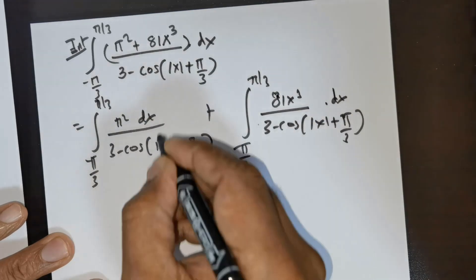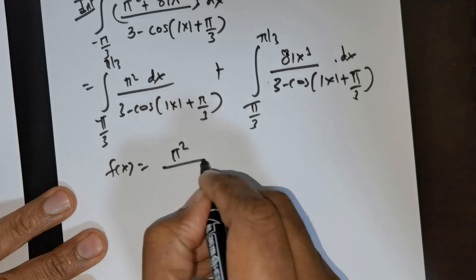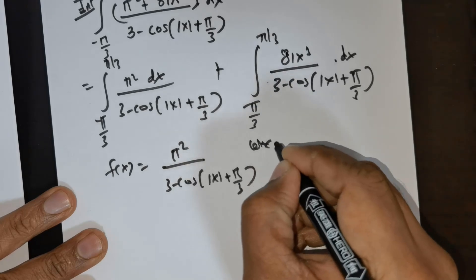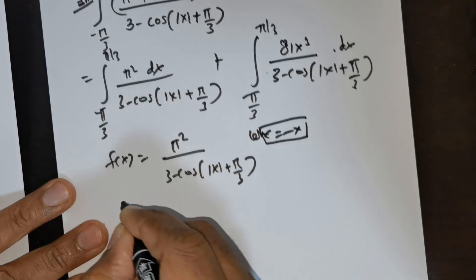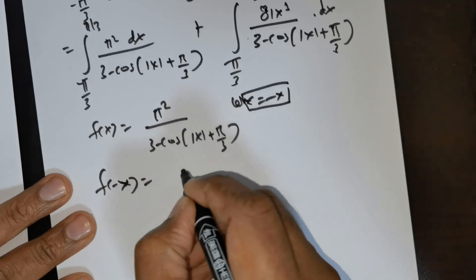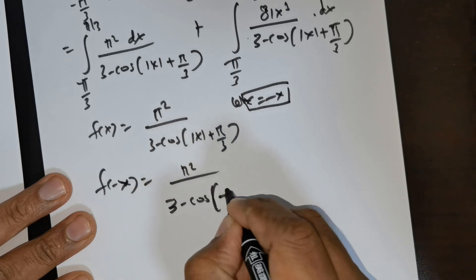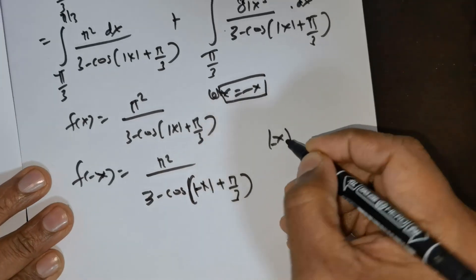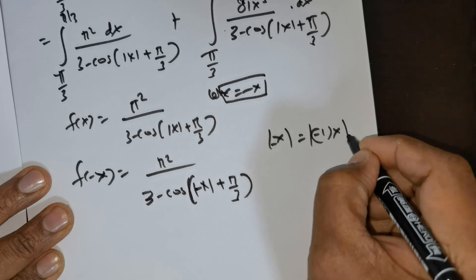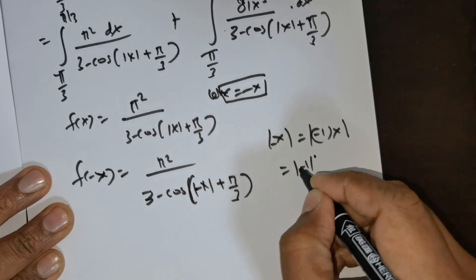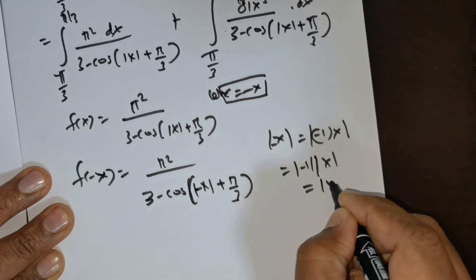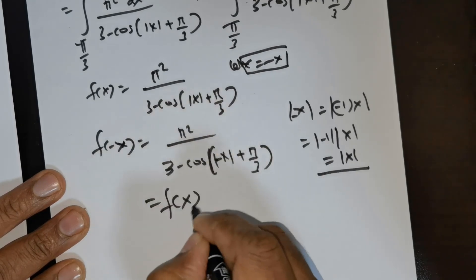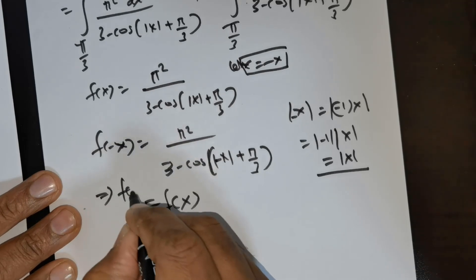Now I would like to draw attention to this function. If I take f(x) = π²/(3 - cos(|x| + π/3)) and substitute x = -x, then f(-x) = π²/(3 - cos(|-x| + π/3)). Now |(-x)| can be rewritten as |-1|·|x|, and since |-1| = 1, we get |x| back again. This means f(-x) = f(x), so f(x) is even.